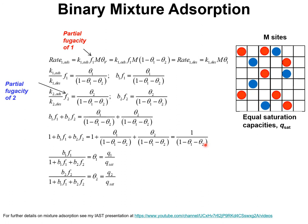Therefore, the fractional occupancy of component 1 is b1f1 divided by (1 plus b1f1 plus b2f2), and the fractional occupancy of component 2 is b2f2 divided by (1 plus b1f1 plus b2f2). We now have expressions to describe the fractional occupancies theta1 and theta2. On this basis we can determine the molar loadings q1 and q2. For further details, see my presentation on IAST on my YouTube channel.